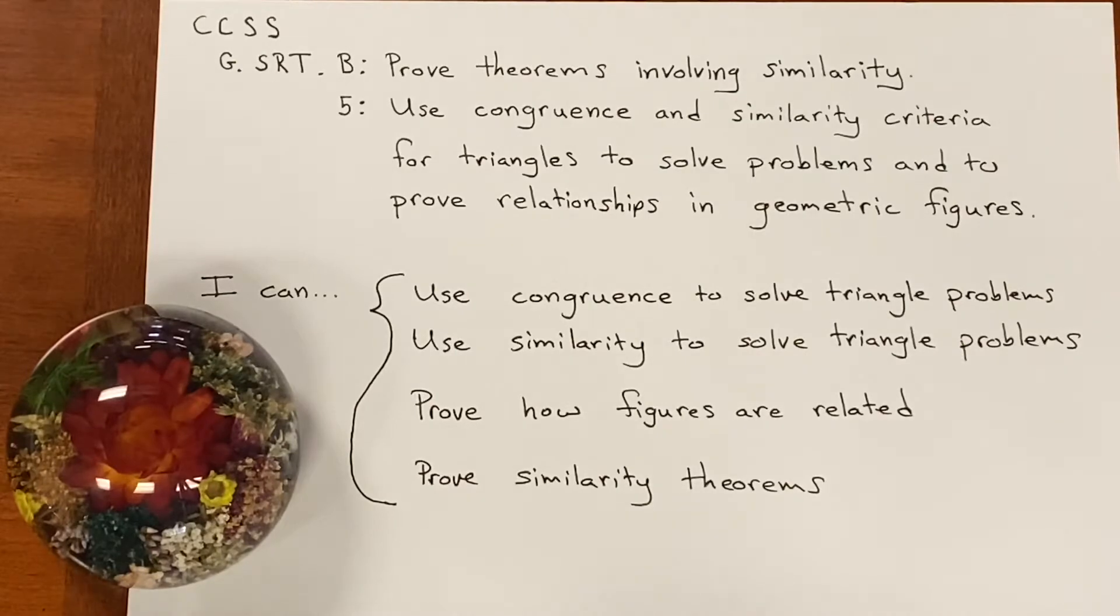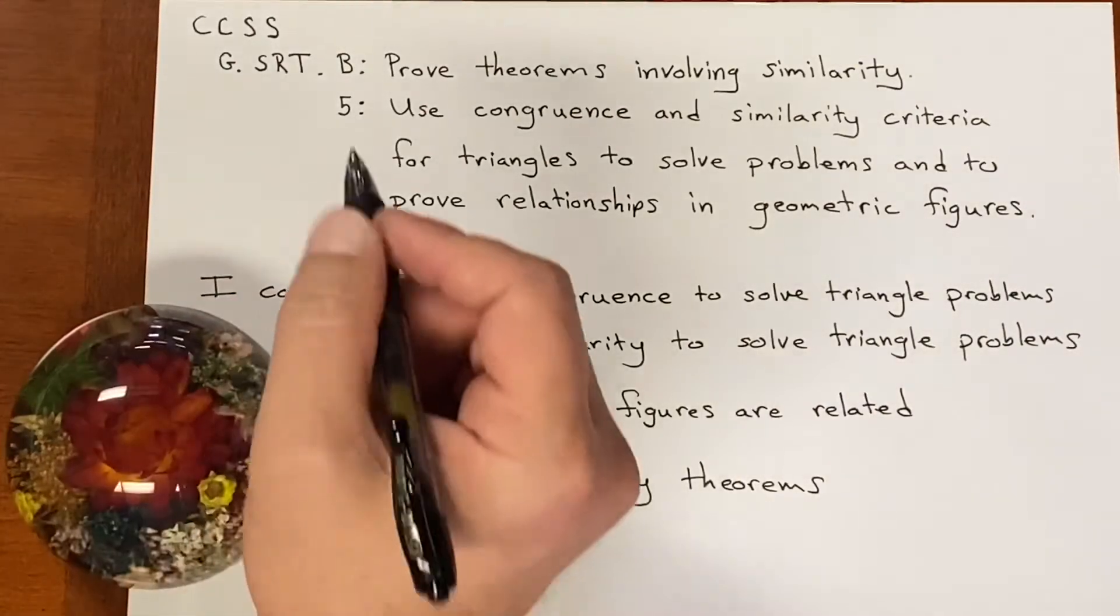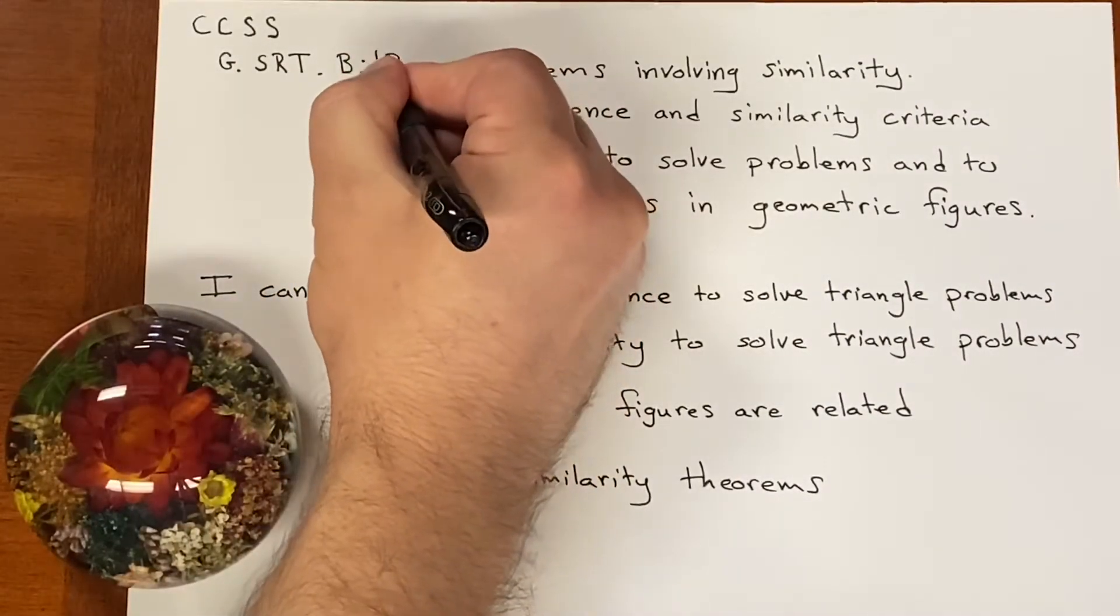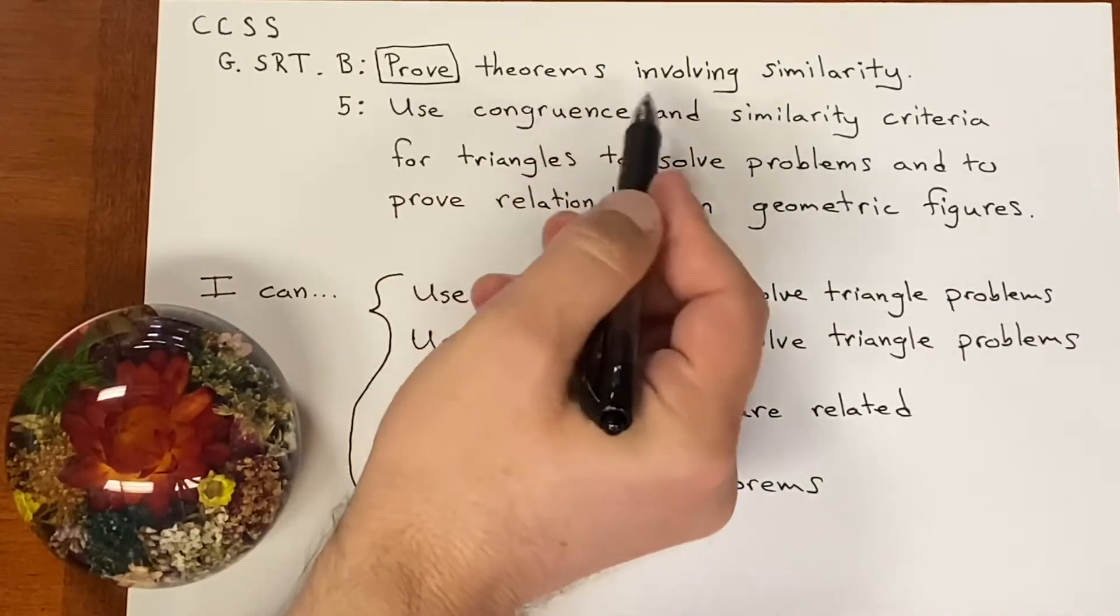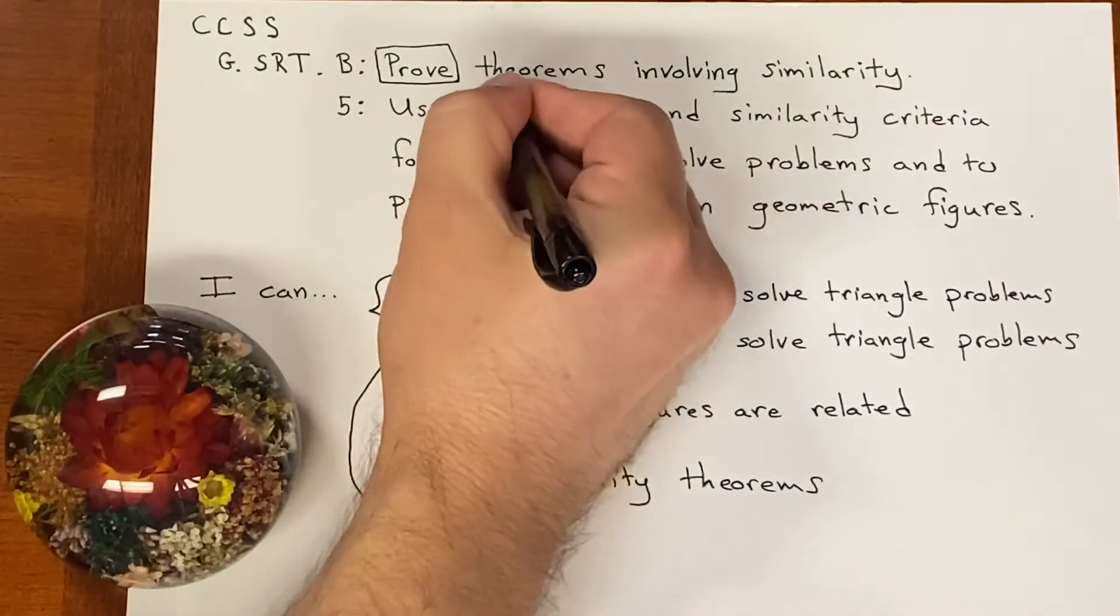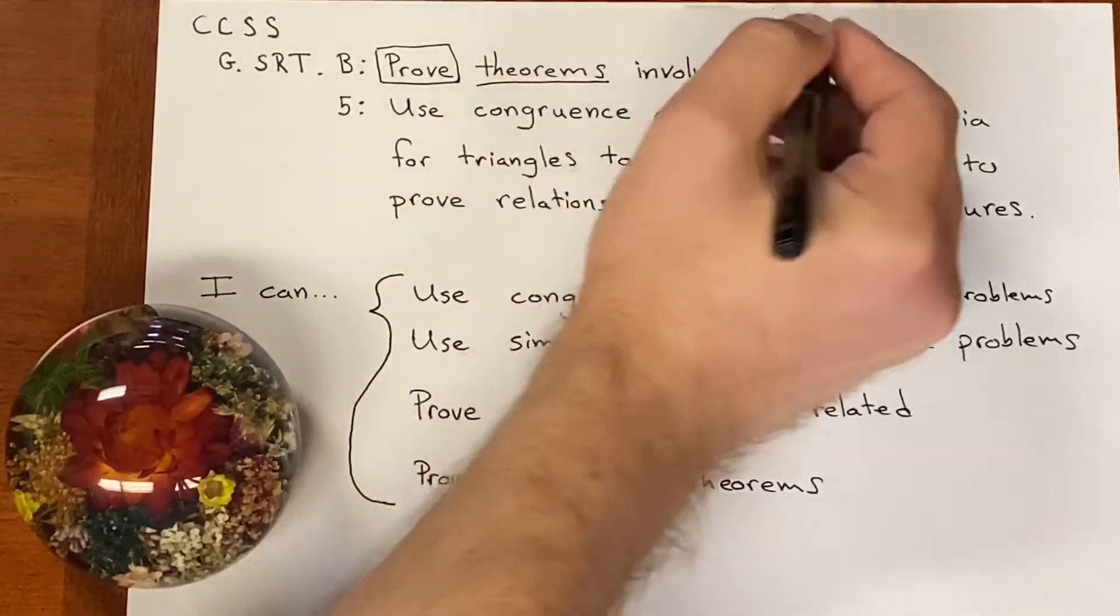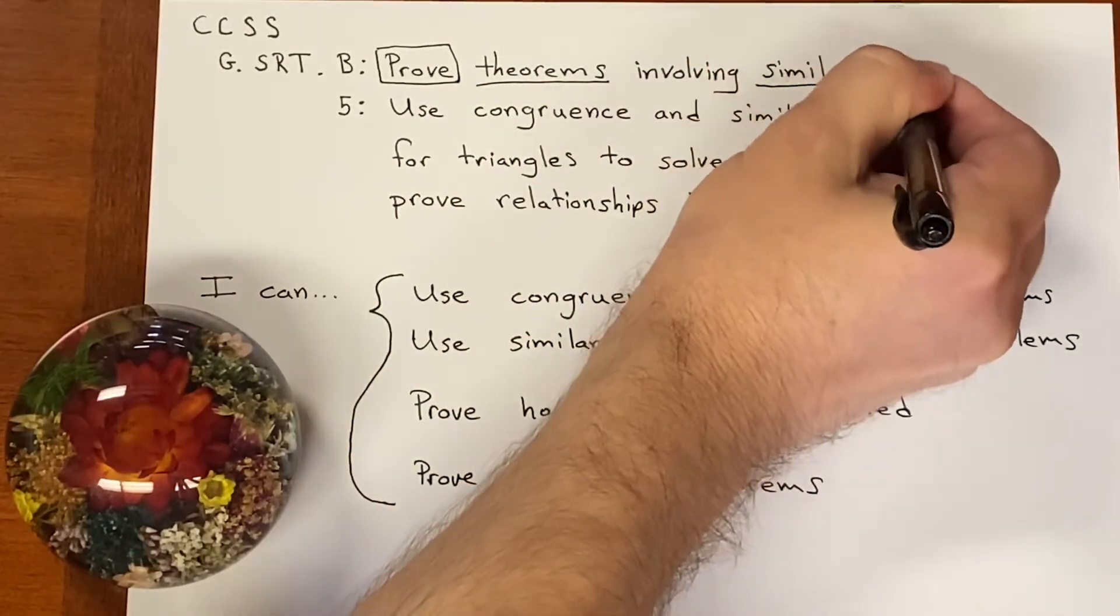Let's go through and box in any action words and underline any math content vocabulary. We are being asked to prove. Prove theorems involving similarities. These are theorems from similarity.